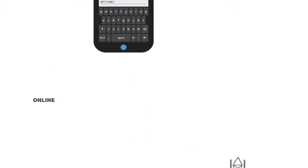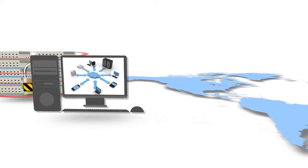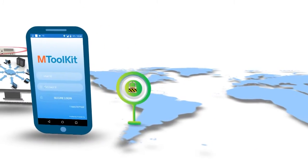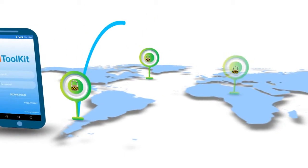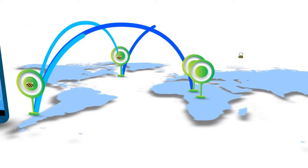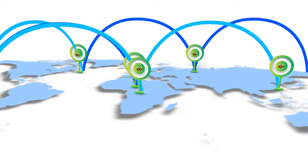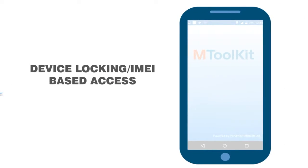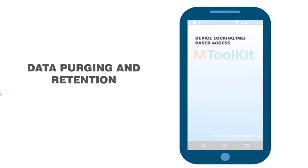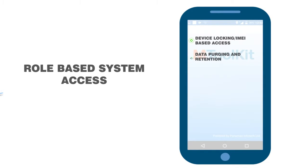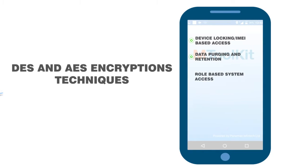mToolkit has highly secure architecture. All data is stored and transferred over a secure network. Data security is further strengthened with features like device locking, data purging and retention, role-based system access, and more.